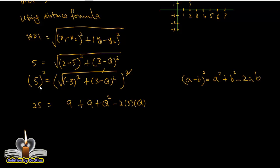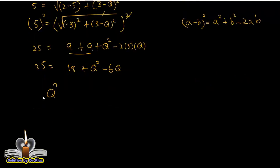So 25 equals 9 plus 9 equals 18 plus Q² minus 6Q. Rearranging: Q² minus 6Q plus 18 minus 25 equals 0.